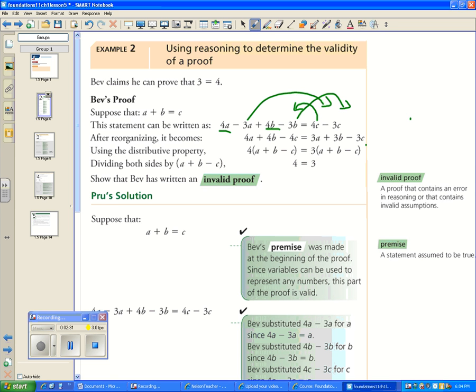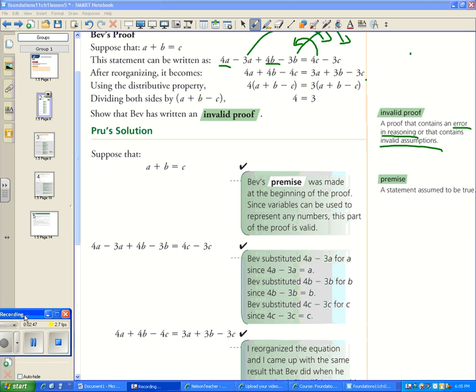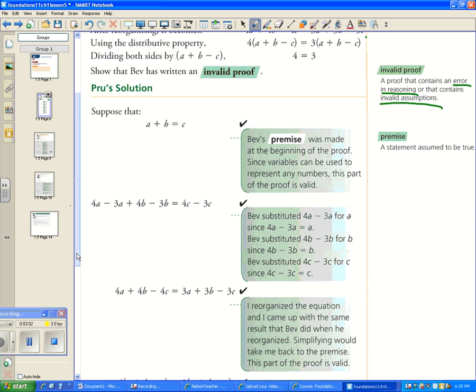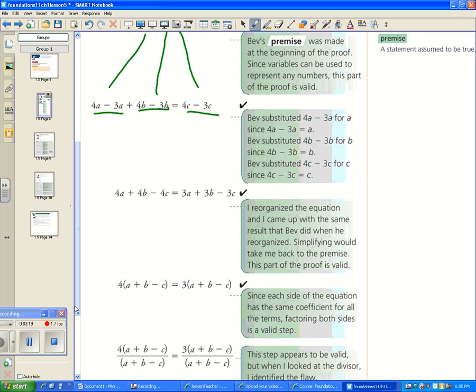So what we need to do is show that this is invalid. A proof is invalid if it contains an error in reasoning or contains invalid assumptions. Here's what Prue has to say about Bev. He went step by step. Step one, a plus b equals c - his premise was at the beginning of the proof, variables can be used to represent numbers, so that's okay. Then this substitution - those are all valid: 4a minus 3a is in fact a, 4b minus 3b is in fact b, and 4c minus 3c is c. And then this reorganization, simplifying is fine. Doing sound mathematical operations is fine. His factoring, that's fine as well.